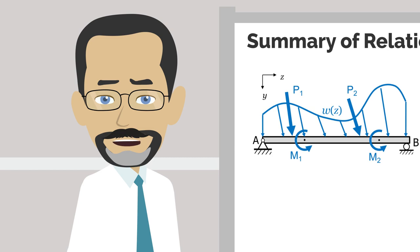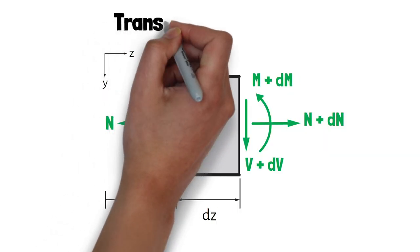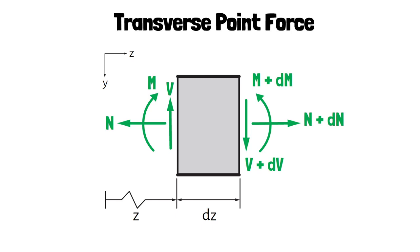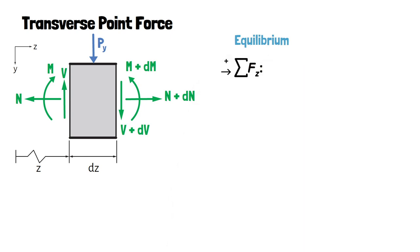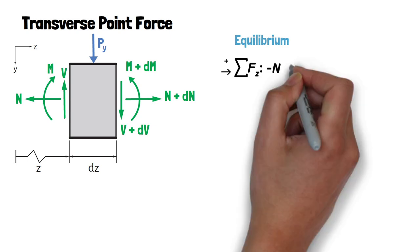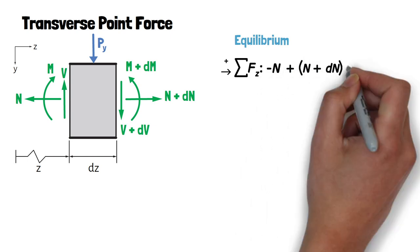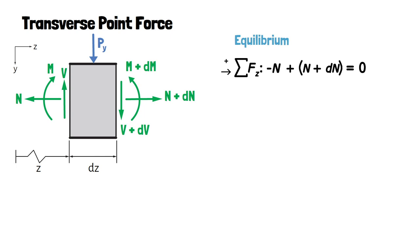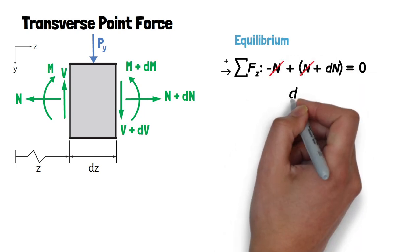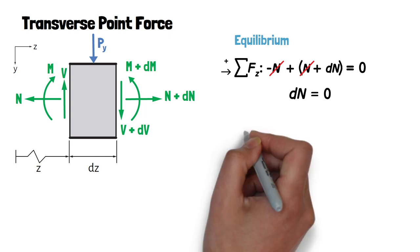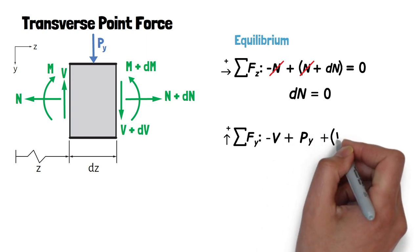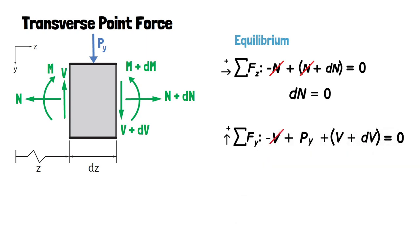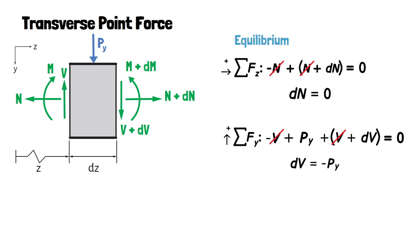Let's now look at the transverse loading cases. We will examine all transverse load cases before summarizing the results, starting with a single transverse point force. Looking at force equilibrium in the z direction, we would expect the internal normal force is not varying across the element, as there is no applied force in that direction — and indeed dn equals zero. In the vertical direction, we obtain that dv is equal to the negative of the applied transverse point force.